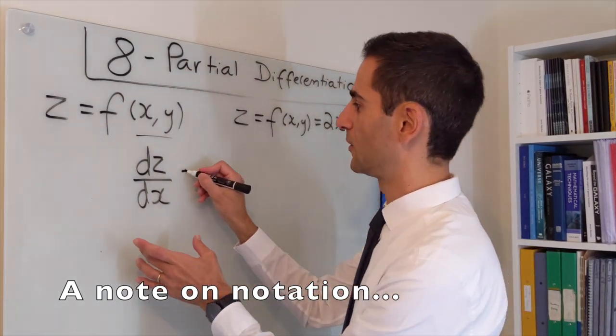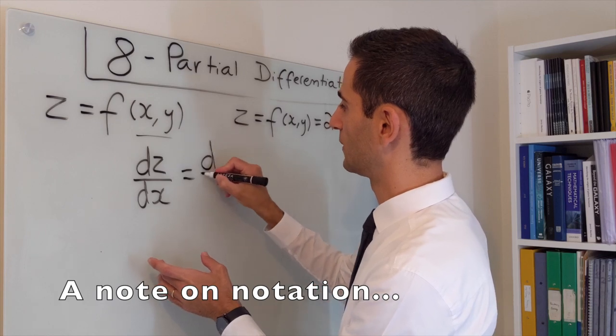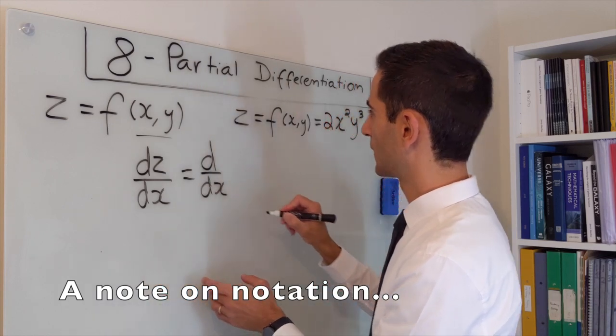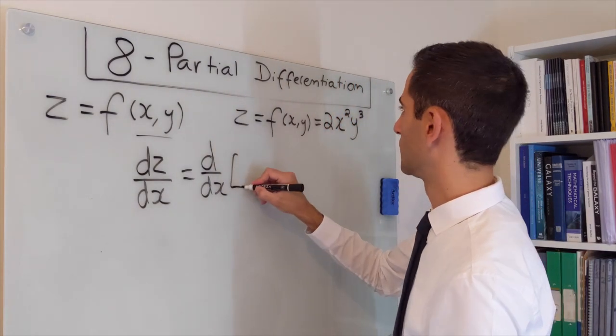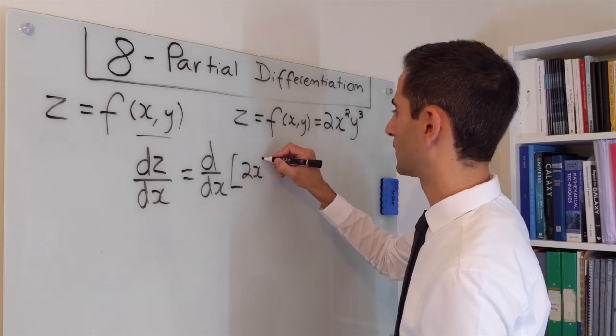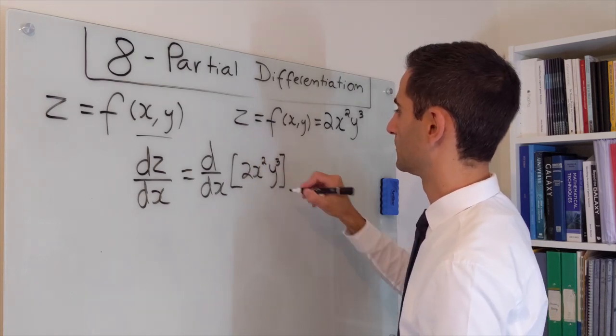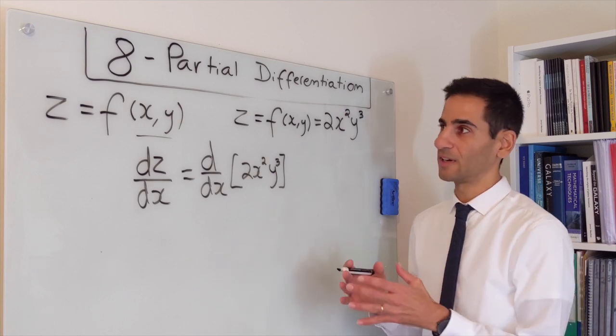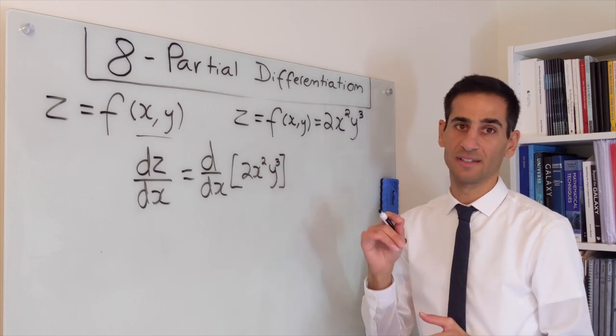With the notation that we've used, this is what we would be writing. And in a way we should be applying d/dx to the expression which is 2x²y³. In this case, because we've said it very explicitly, y is not a function of x.